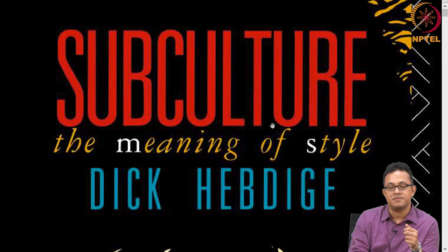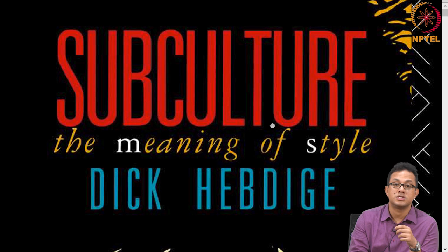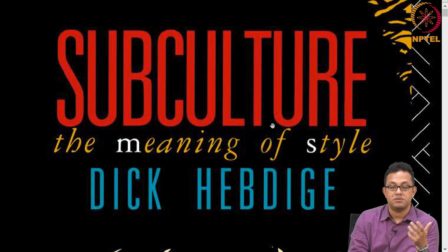Subculture: The Meaning of Style by Dick Hebdige draws on a series of writers and thinkers. It draws on Eliot's understanding of culture, Roberts' understanding of culture, and Matthew Arnold's understanding of culture. Then of course it mentions and heavily draws on Raymond Williams, a figure we have already covered.